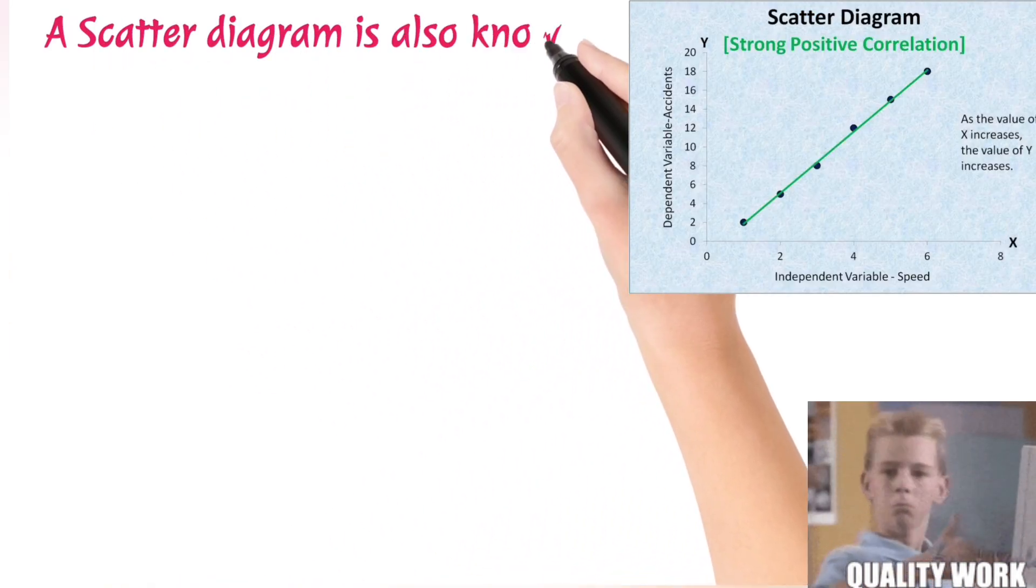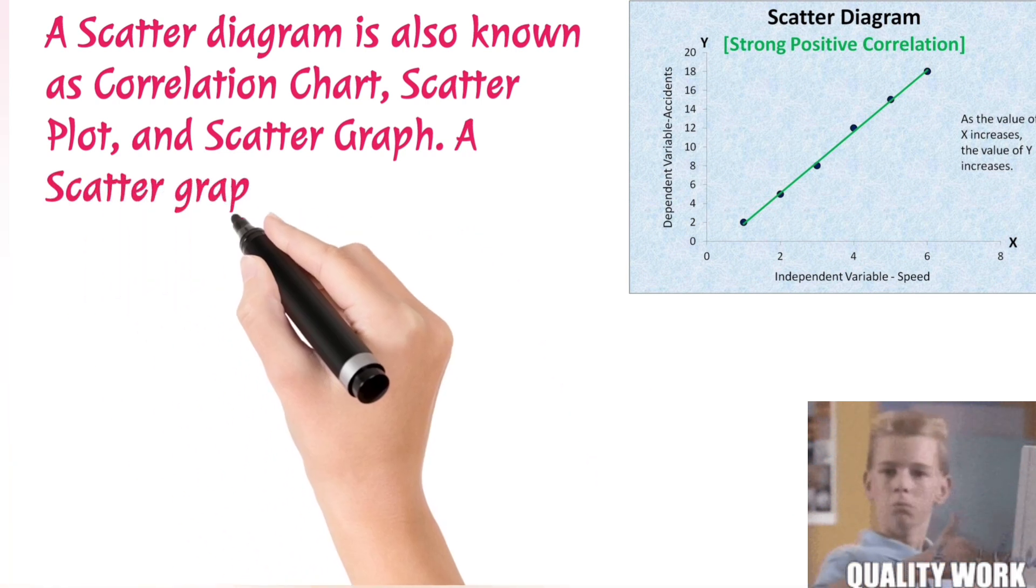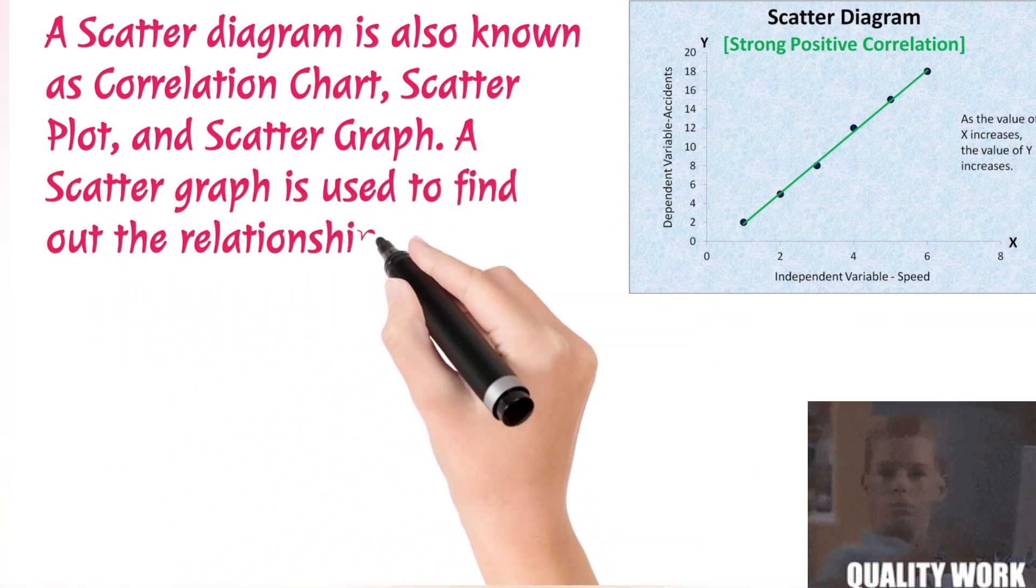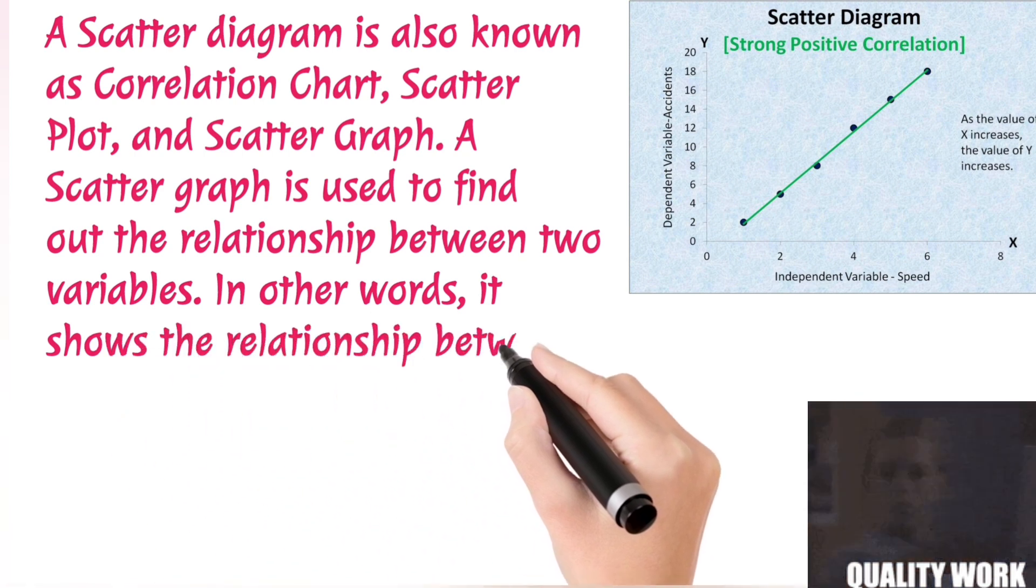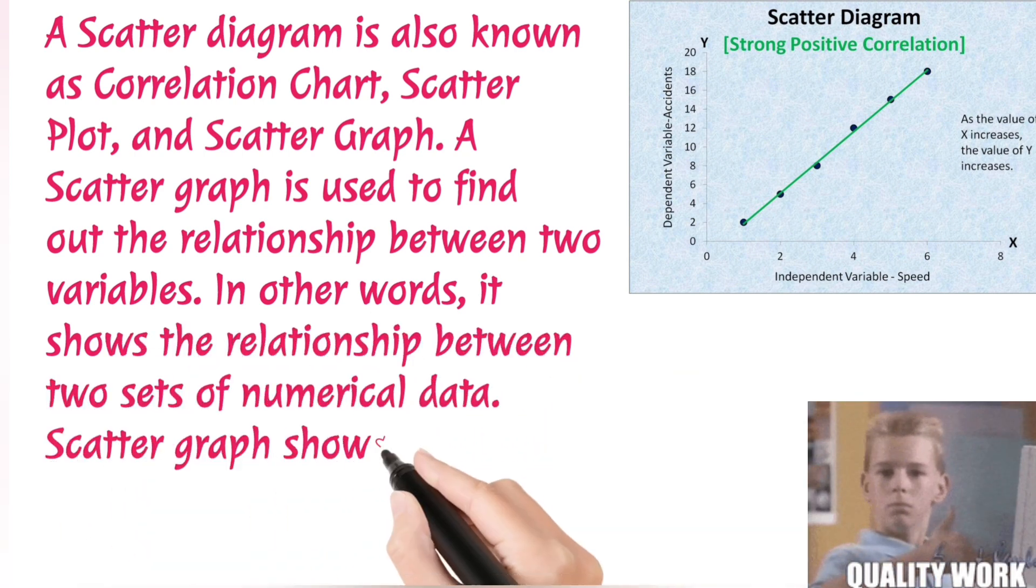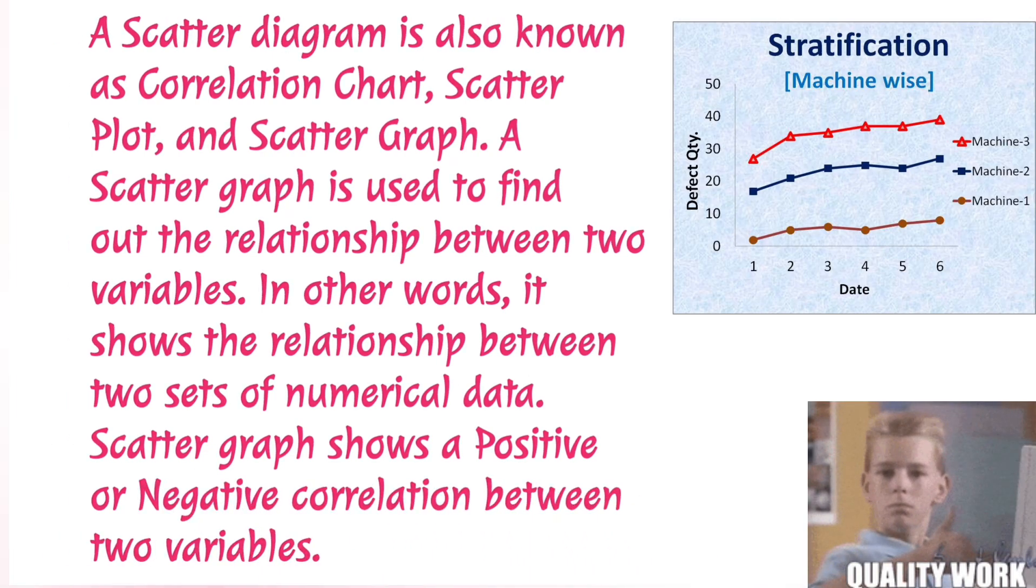A Scatter Diagram is also known as Correlation Chart, Scatter Plot, and Scatter Graph. A scatter graph is used to find out the relationship between two variables. In other words, it shows the relationship between two sets of numerical data. Scatter graph shows a positive or negative correlation between two variables.